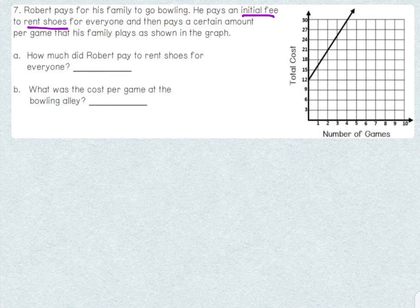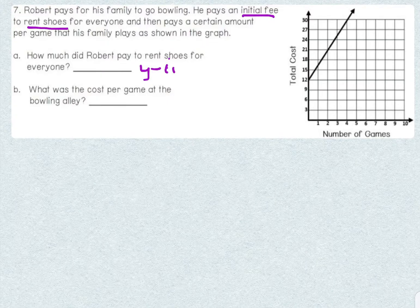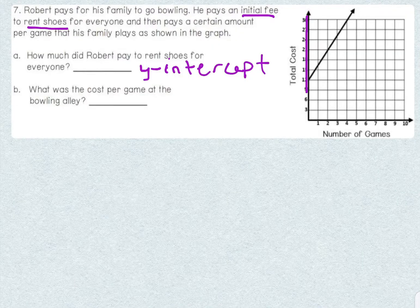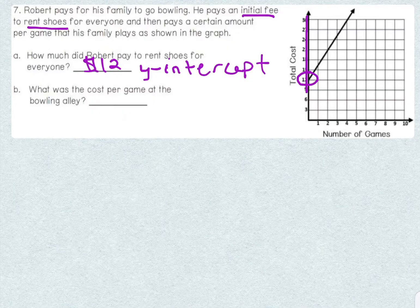This represents the y-intercept in the problem. Where do we have to look on a graph to find the y-intercept? We have to look on the y-axis — where our line intercepts the y-axis — and that is at $12. So how much did Robert pay to rent shoes for everyone? He paid $12. That's before any game started.